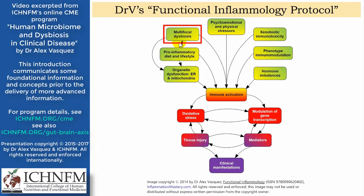Other upstream contributors include psycho-emotional and physical stressors, xenobiotic immunotoxicity, immunophenotype imbalance, and hormone or endocrine imbalances. All of these contribute in concert to immune activation, which drives the clinical pathology we deal with in our practices — whether it's obesity and insulin resistance, cardiometabolic disease, allergy, asthma, eczema, atopic dermatitis, or the more severe inflammatory syndromes we call autoimmunity, with rheumatoid arthritis and lupus being two of the prototypes.